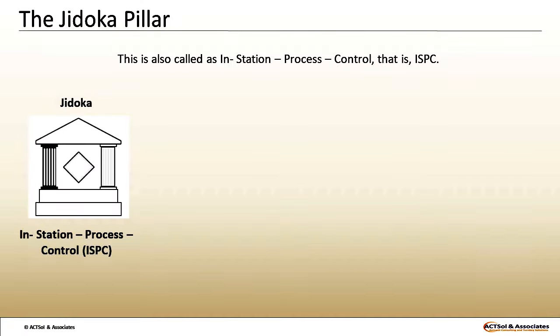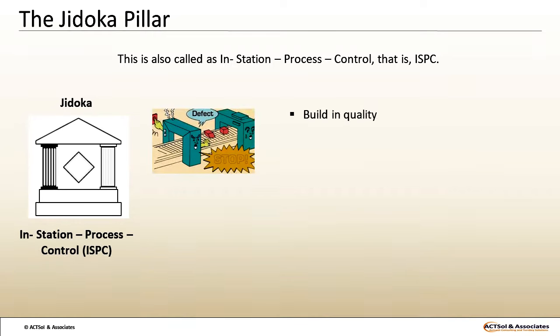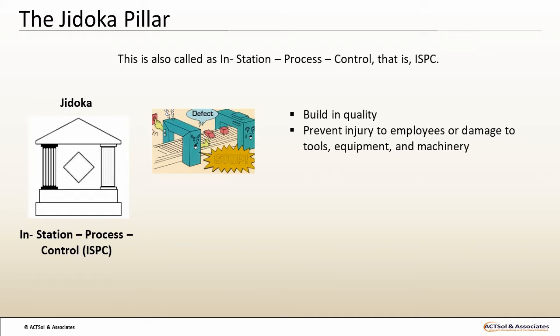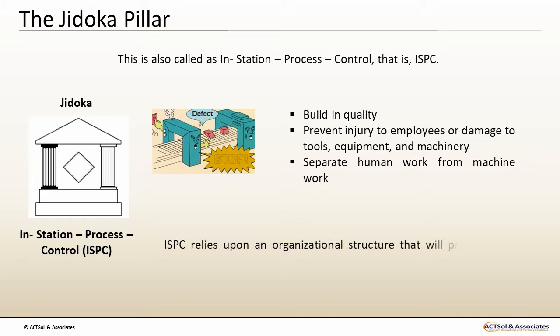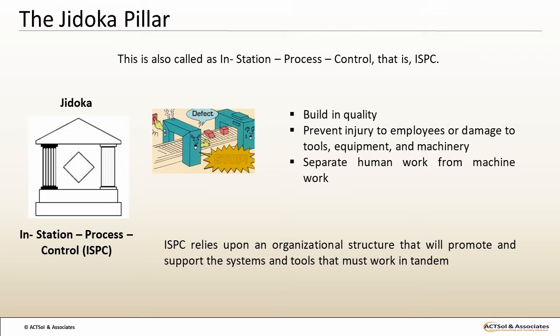Jidoka is also called In-Station Process Control, i.e., ISPC. The objectives are to build in quality by preventing the mass production of defective products, prevent injury to employees or damage to tools, equipment and machinery when an abnormal condition occurs, and separate human work from machine work. To achieve these objectives, ISPC relies upon an organizational structure that will promote and support the systems and tools that must work in tandem to ensure that prompt action is taken when abnormal conditions occur.